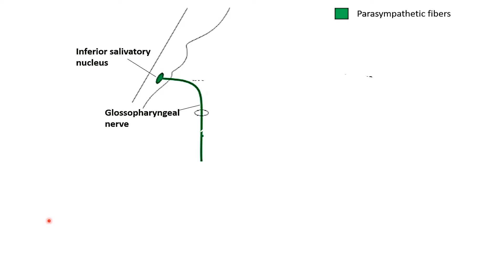As parasympathetic innervation involves two neurons — preganglionic and postganglionic — let us trace the preganglionic pathway. In the brainstem, comprising the midbrain, pons, and medulla oblongata, we can see a nucleus of the glossopharyngeal nerve: the inferior salivatory nucleus. It is called inferior because the facial nerve has a superior salivatory nucleus.